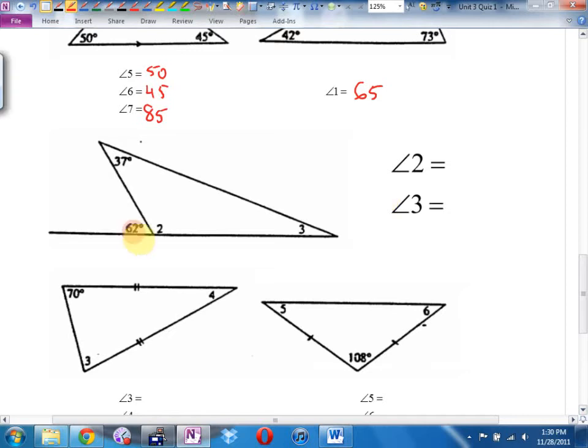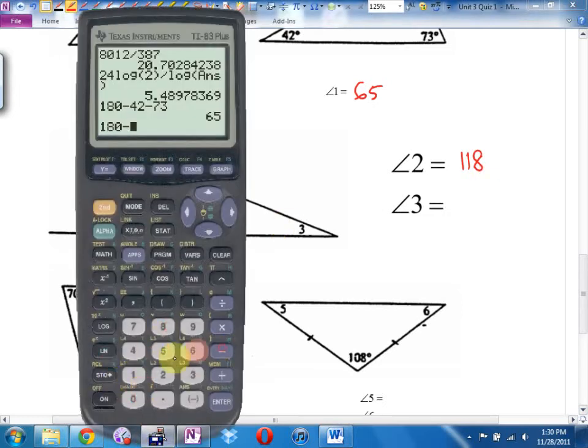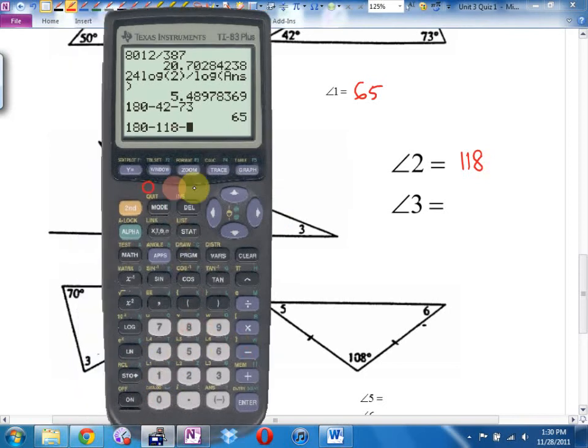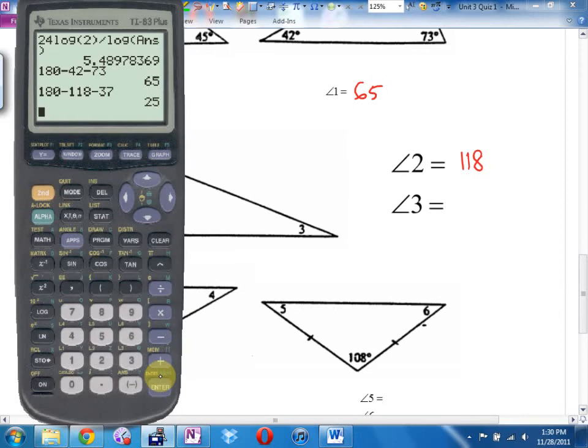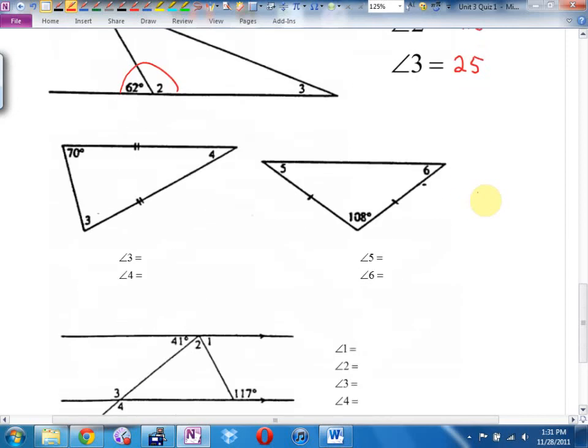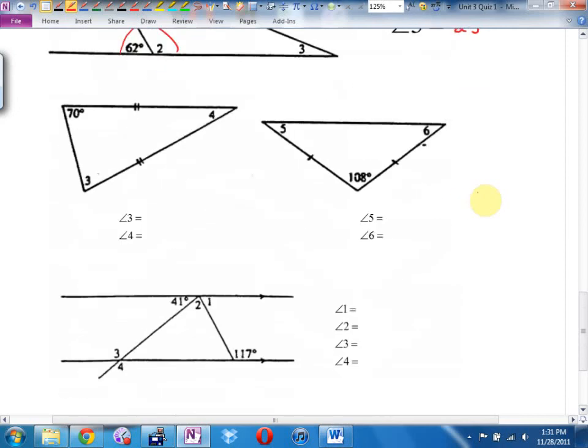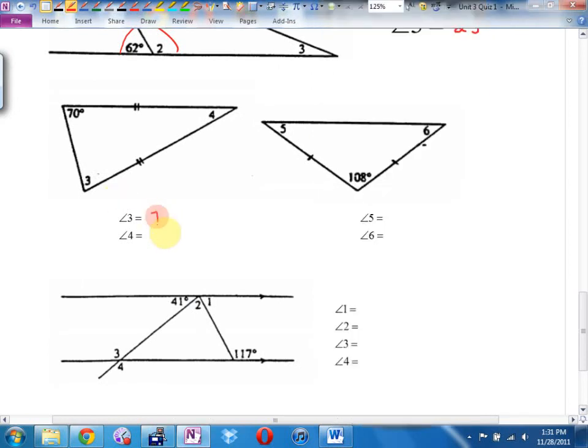Angle 2. That's supplementary, 118. Angle 3. That's a triangle. It's going to be 180 minus 118 minus 37. Angle 3, is it 25? Angle 4. This is an isosceles triangle. Angle 3 is 70 because it's isosceles. Angle 4 is 180 minus 70 minus 70. Angle 4 is 40.